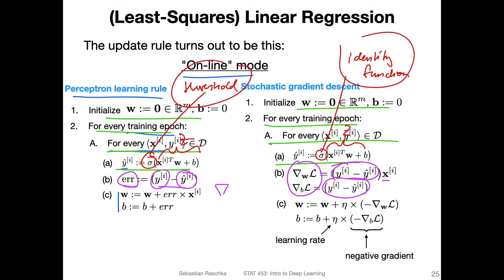So if you're wondering what these symbols here mean, this nabla symbol stands for the gradient. So here we are computing the gradient of the loss, the gradient of the loss L with respect to the weights here. So this is the gradient of the loss function with respect to the weights. And then here at the bottom, this is the same, also the gradient of the loss with respect to the bias unit here, or derivative.